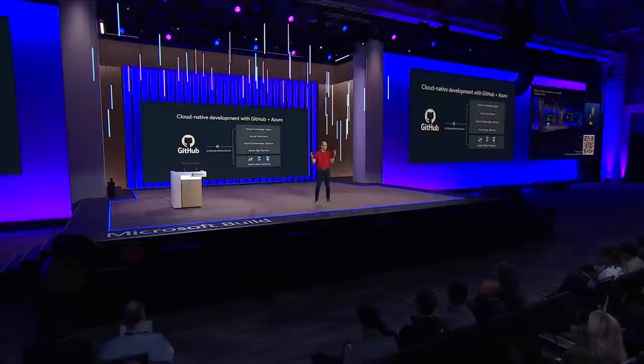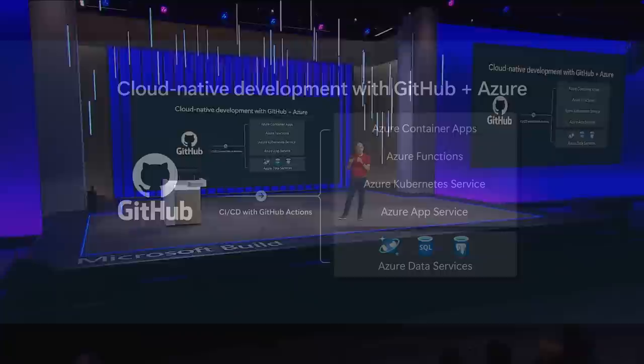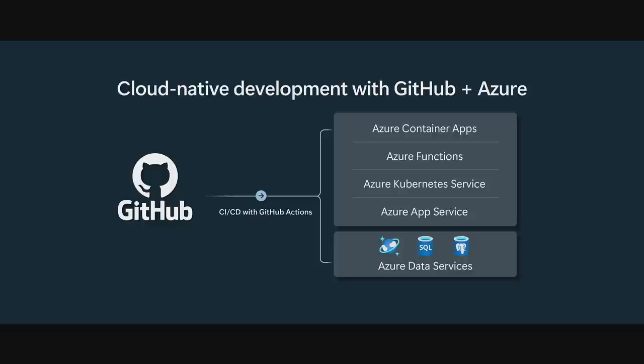In the last demo we used GitHub Codespaces to both code the plugin and do a simple test of it within ChatGPT. Because Codespaces is running in the cloud, it was really easy for ChatGPT to connect to it with a nice interactive debugging experience. This works really well for getting started and simple development scenarios, but once you go into production and your AI plugin gets more sophisticated, you're going to want a back end that can scale — and that's where Azure's elastic cloud and cloud-native services come in.